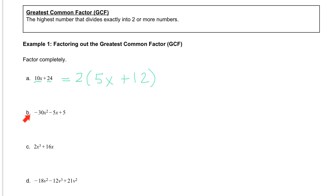Let's try another one in letter B. This time we have three terms: negative 30x squared, negative 5x, and 5. If we have a leading coefficient that is negative, we're going to factor that negative out, as it's going to make things easier later on if that leading coefficient is positive. So I know I have to take out a negative, and then I'm looking at all my terms.